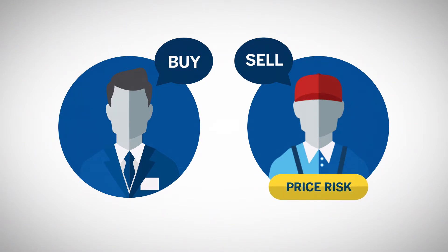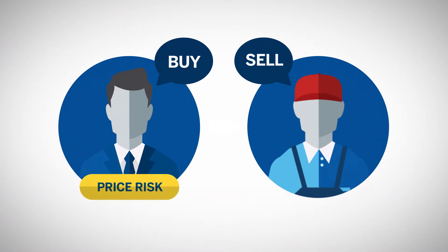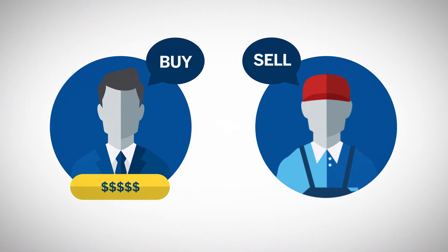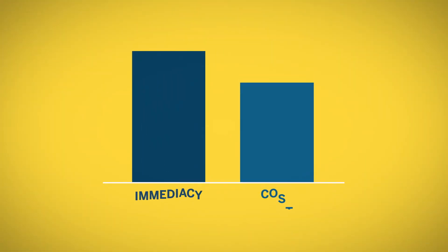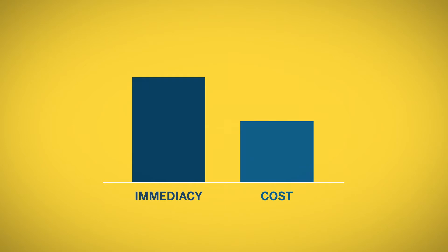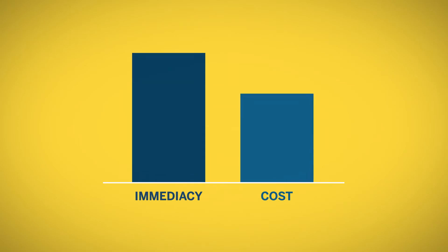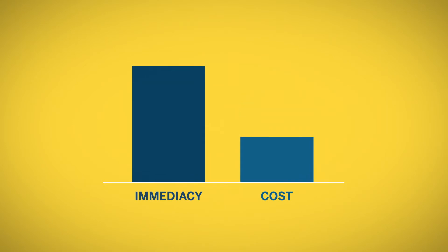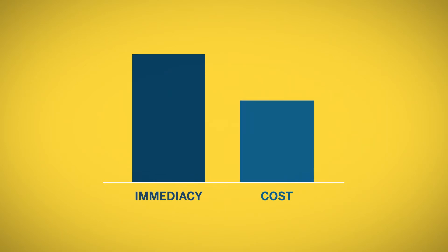The price risk that the seller wants to eliminate is then transferred to the market maker when the trade is made. Market makers are willing to create immediacy only if they are appropriately compensated for the risk they take. The conditions for a liquid market are present when the demand for immediacy is high and the cost of continuous market making is low.